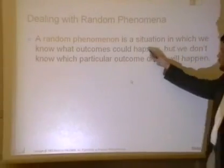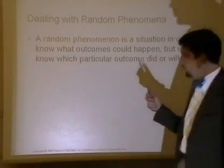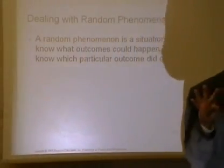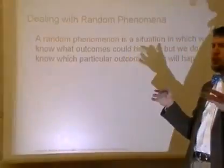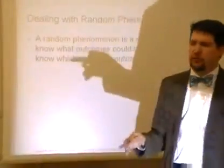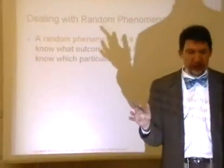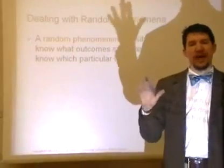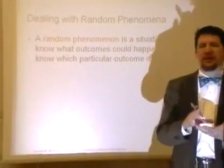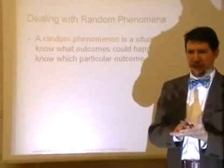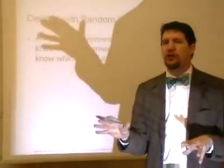A random phenomenon is a situation in which we know what outcomes could happen, but we don't know which particular outcome will occur. Like when we were selecting someone from the classroom to be sacrificed to the dragon — we knew who could be selected, but not which specific person would be chosen. Randomness requires knowing the population that could be selected.